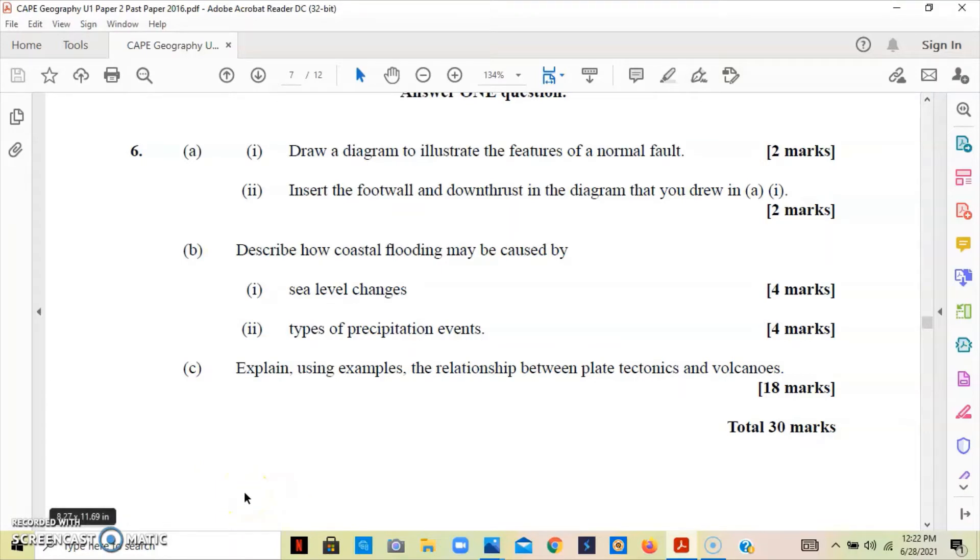Along the subduction zone, we'll have volcanic island arcs developing. At divergent plate boundary zones, we have the two plates pulling away from each other, causing a tear or crack in the earth's crust. The magma will escape through that tear. At convergent plate boundaries, the oceanic plate is subducting and being melted in the mantle, and along the subduction zone you have volcanic island arcs being developed.